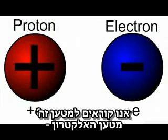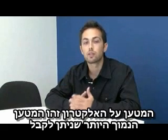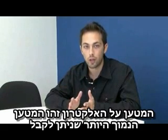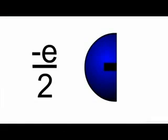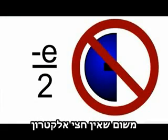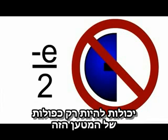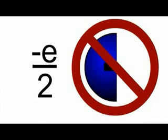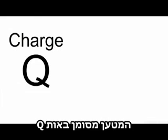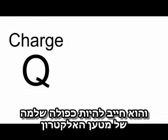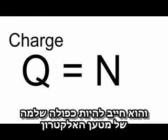We call this amount of charge the electron charge, and we give it the symbol E. The charge on the electron is the smallest amount of charge you can have. You can't have half an electron worth of charge, because you can't have half an electron. You can only have multiples of this amount of charge, since all objects are made up of protons and electrons. Charge is given the symbol Q, and it must always be a multiple N of the electron charge.